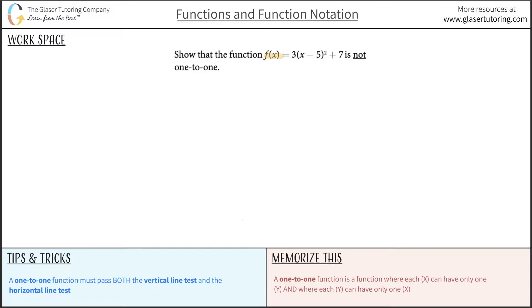Show that the function f(x) = 3(x - 5)² + 7 is not one-to-one. There's an easy way to do this and a harder way to do it, but it depends on how you're allowed to do it.